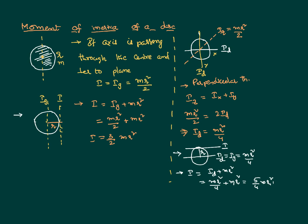It is very clear from all this discussion that whenever the axis changes, the moment of inertia also changes. One important point to observe closely: both the central perpendicular axis and the diameter axis pass through the center of gravity, but in the first case the center-of-gravity axis is perpendicular to the plane, whereas in the second case it is in the plane. Whenever the axis changes, it is obvious that the moment of inertia also changes. Thank you.